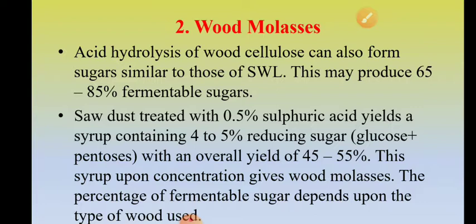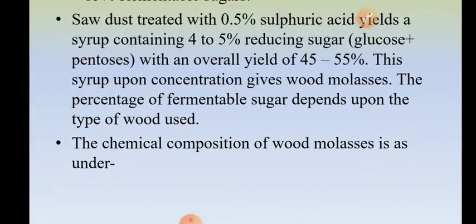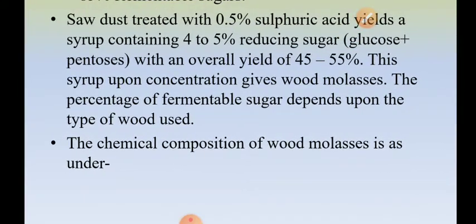For example, sawdust treated with 0.5 percent sulfuric acid yields a syrup containing 4 to 5 percent of reducing sugars — glucose and other pentoses — with an overall yield of 45 to 55 percent. This syrup upon concentration gives wood molasses.